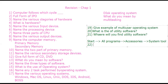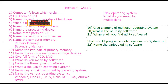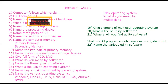Name the various utility software: antivirus, data compression, disk defragmentation, disk cleaner, network utilities, backup utility, and file managers and disk management. These are the various utility softwares.